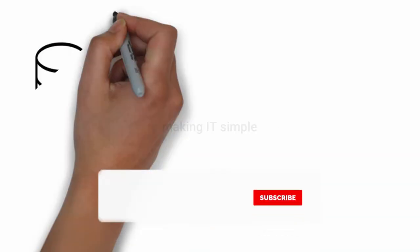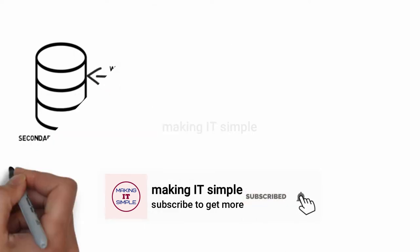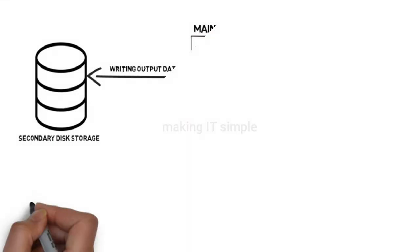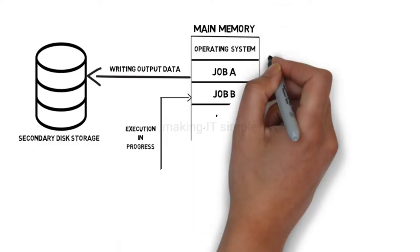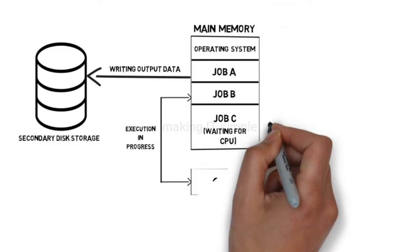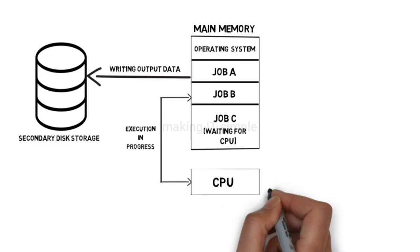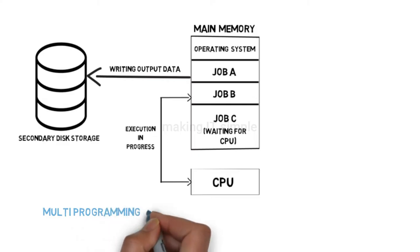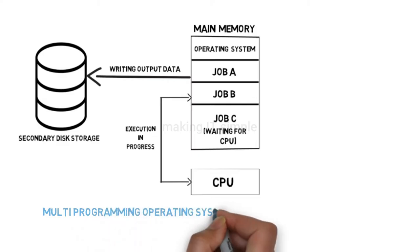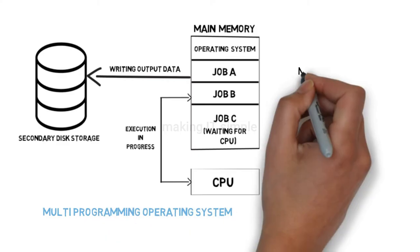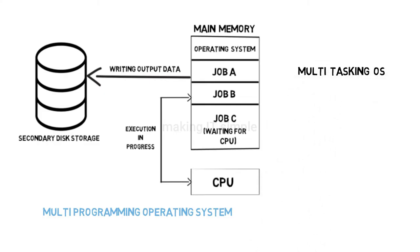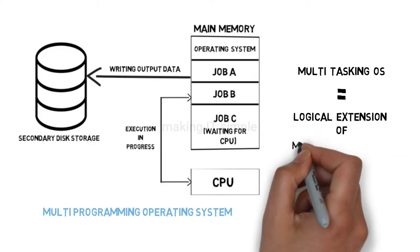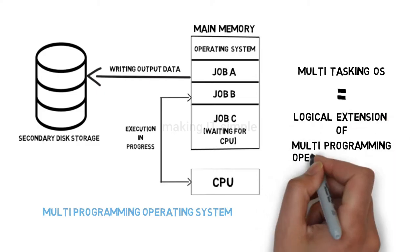In the previous video we saw about multi-programming operating system, where multiple programs are loaded in main memory and CPU executes one process completely, then moves to next process until previous process is not interrupted. In that case CPU moves to next process and does not wait for interrupted process. Multitasking operating system is the logical extension of multi-programming, based on the same concept but with some improvements.